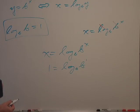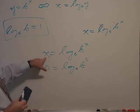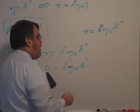Now, there's another interesting property here. If instead of replacing x with 1, what if I replaced it with 0? So, I'll put a 0 here. So, 0 equals log base b, b to the 0. But b to the 0 equals to 1.